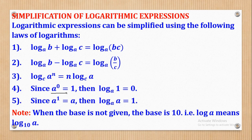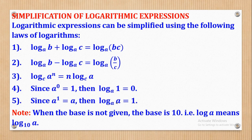Since any number to power 0 equals 1, log base a of 1 is equal to 0, where a can be any base. Also, since a to power 1 equals a, log base a of a is equal to 1 — as long as the base and the argument are the same, they cancel to give 1.